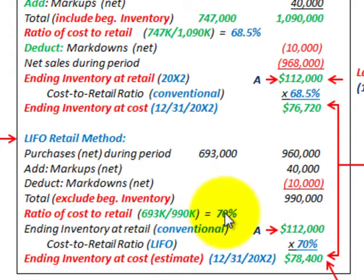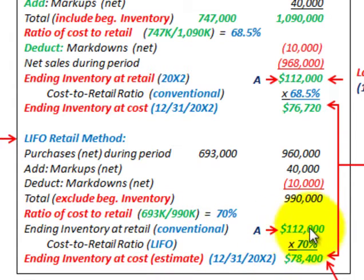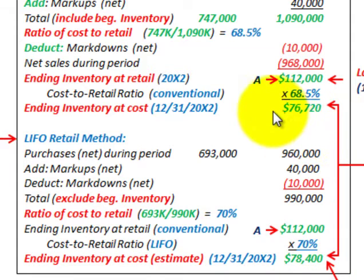Our ending inventory at retail is the $112,000 carried down from the conventional calculation. Multiplying our LIFO cost-to-retail ratio of 70% times the $112,000 ending retail inventory, we get ending inventory at LIFO cost of $78,400 as of December 31, 20X2. We can now compare this to the conventional retail amount of $76,720 to determine the required adjustment.